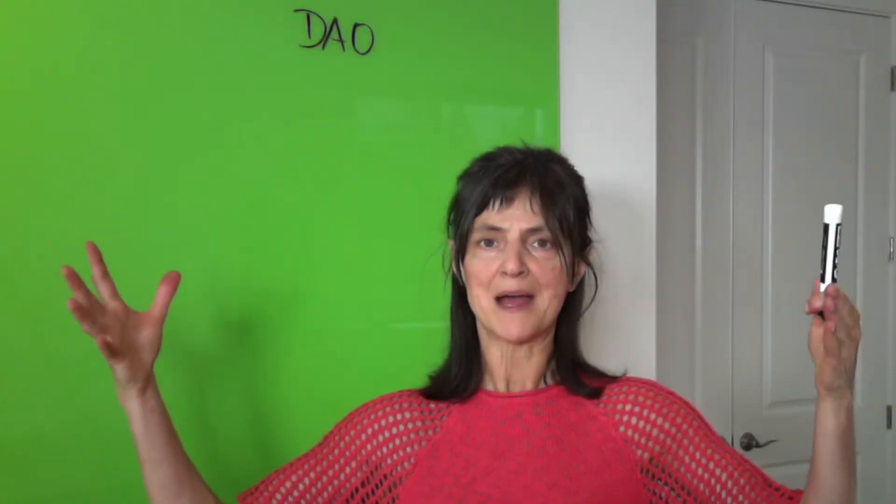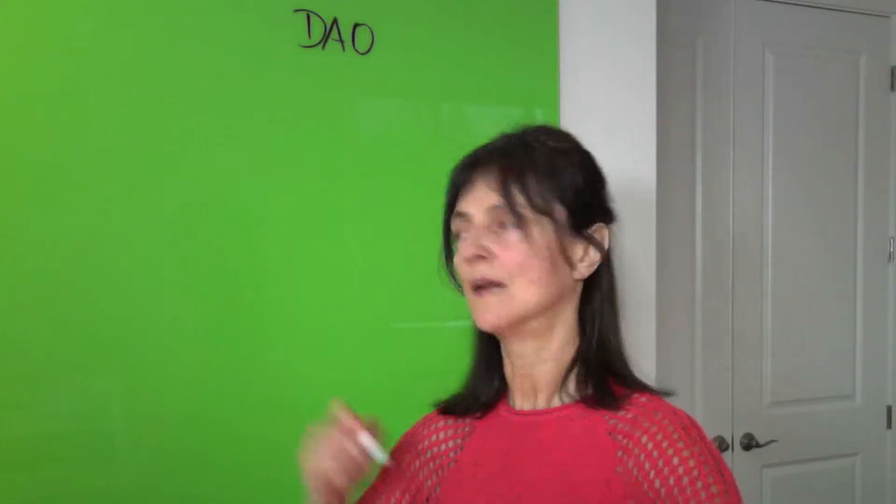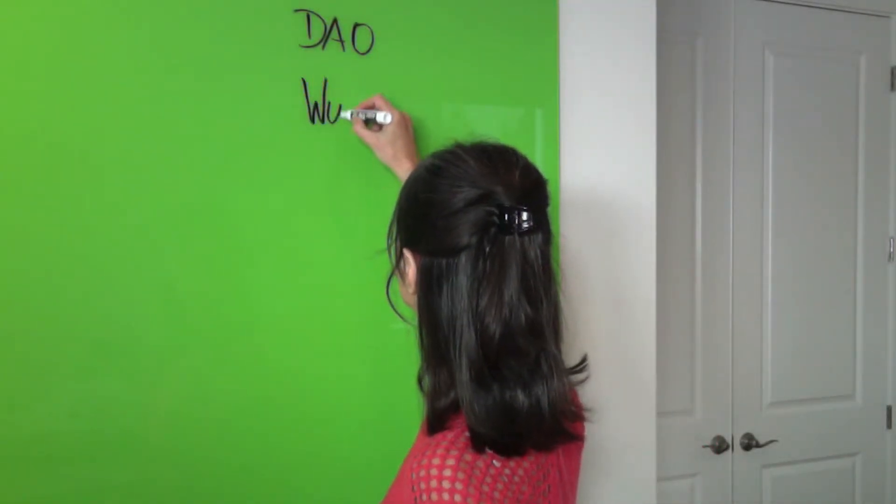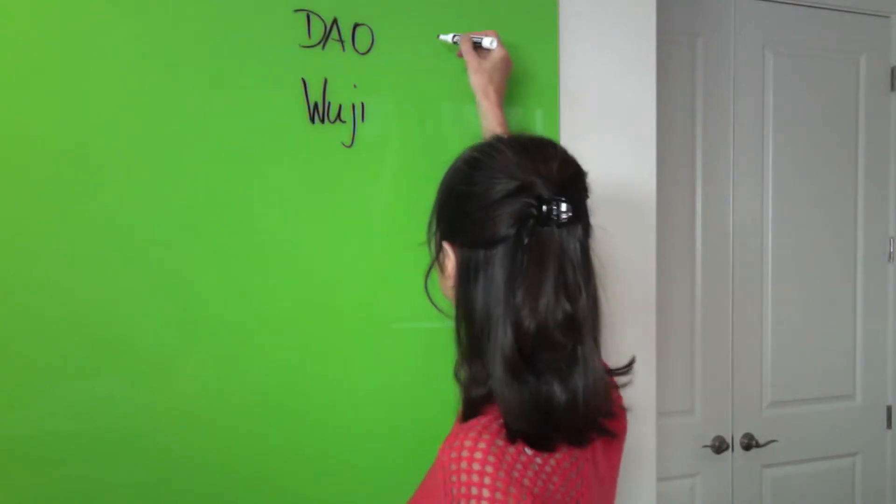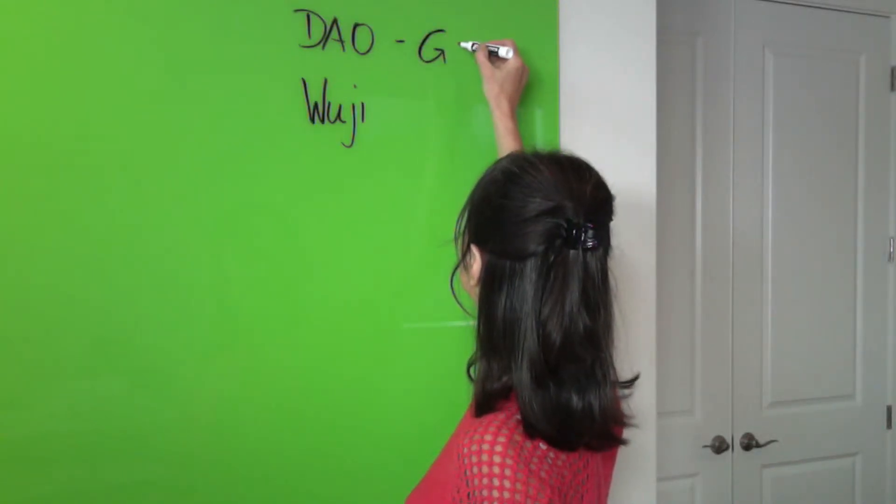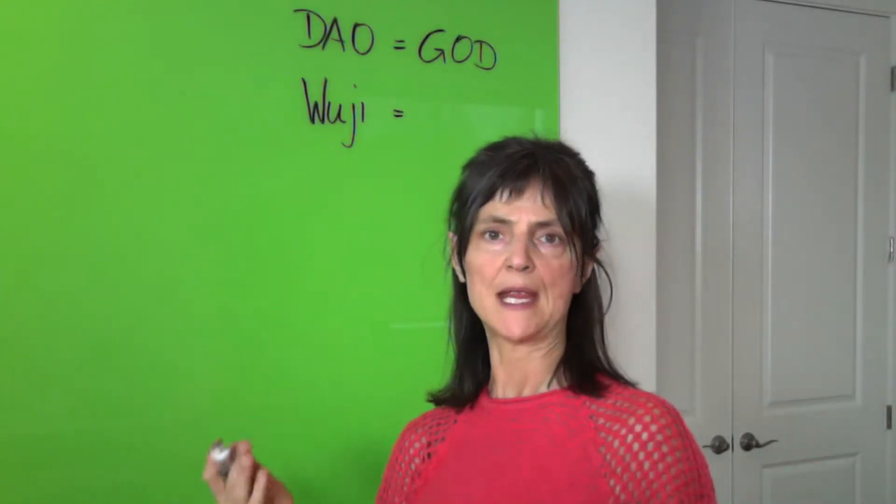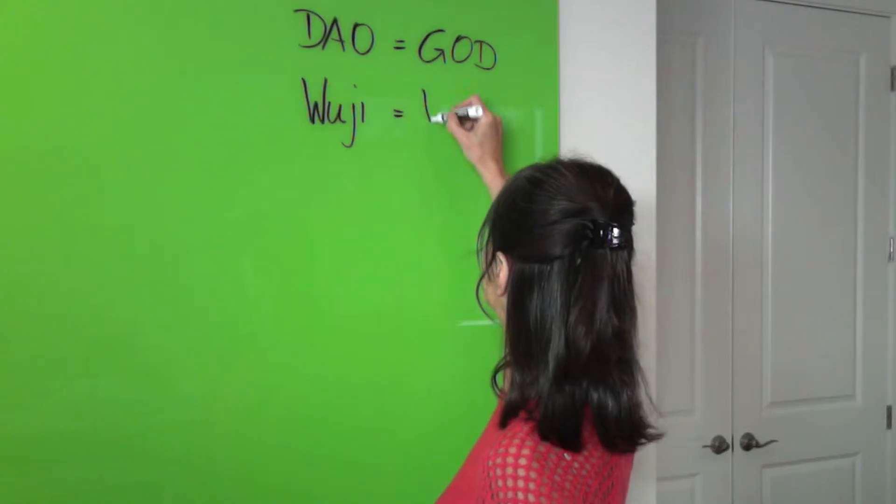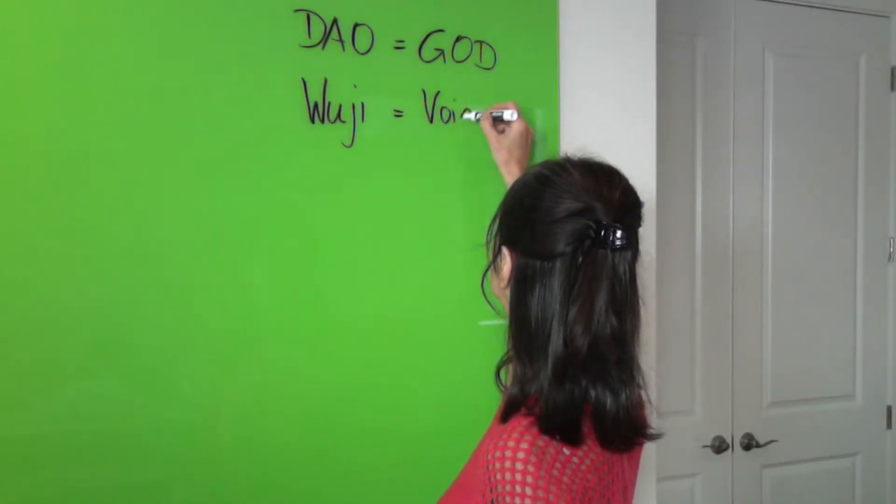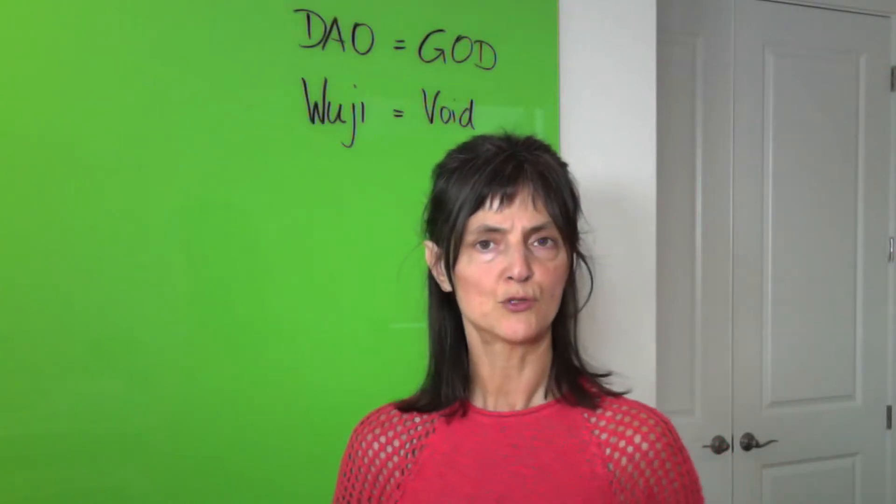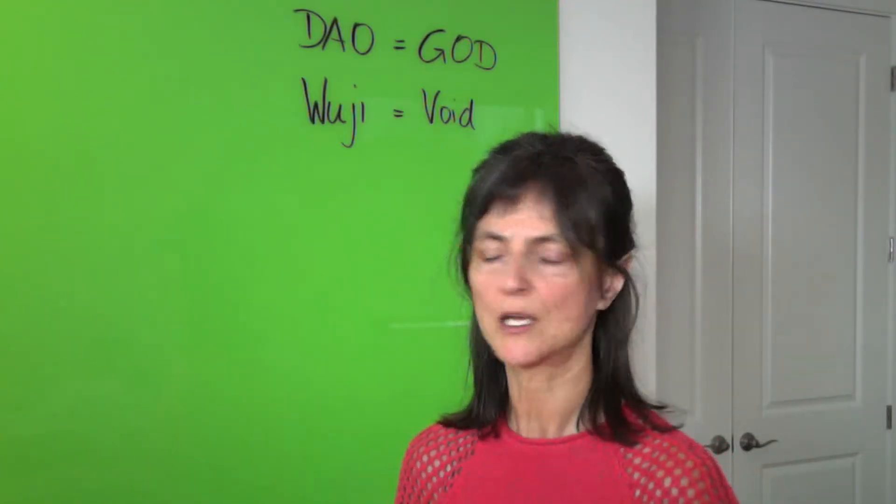And the big mind, the universal mind, contained in Wuji, what is called here. So that would be God. And Wuji would be the space. We call this a big void in those traditions. So this may help to translate that a little bit easier.